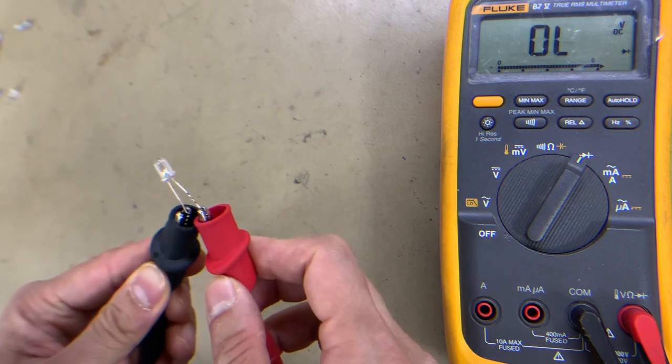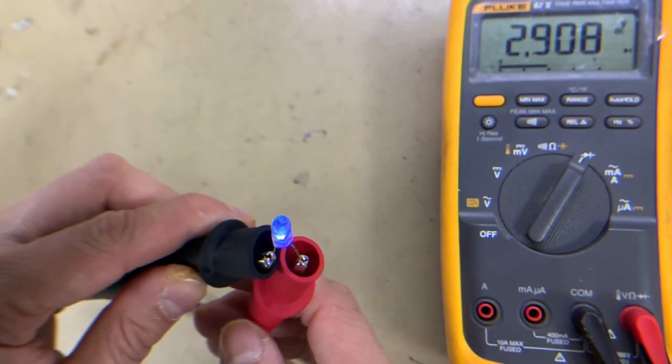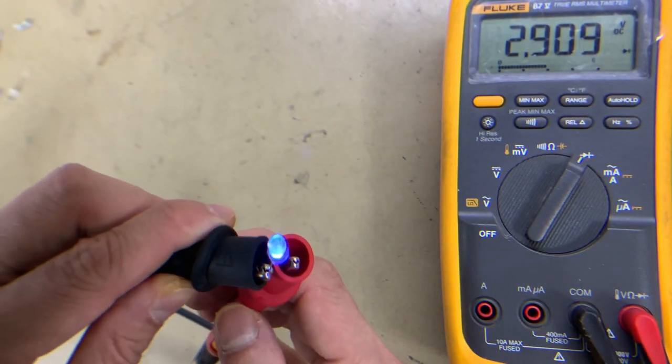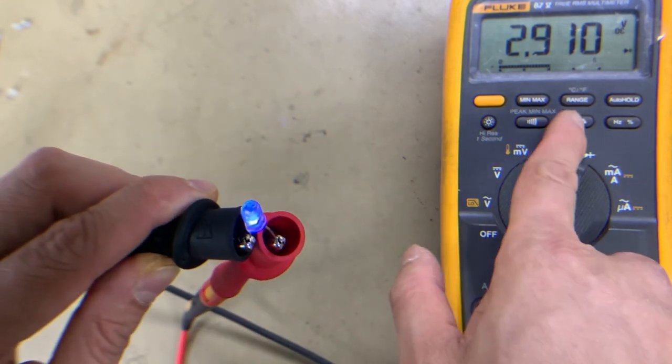As you can see, the LED is glowing—there's a light. It has a reading of approximately 2.90911.